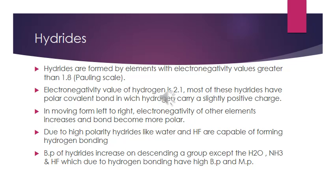The boiling points of hydrides increase on descending a group. However, this trend is not the same for water, ammonia, and HF. This is because we also have hydrogen bonding in these compounds — due to hydrogen bonding, their melting and boiling points are anomalously high, which is why they show this exception.